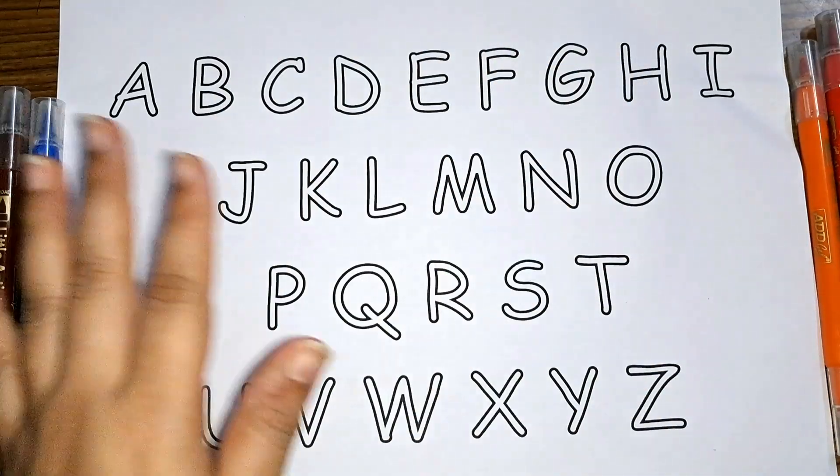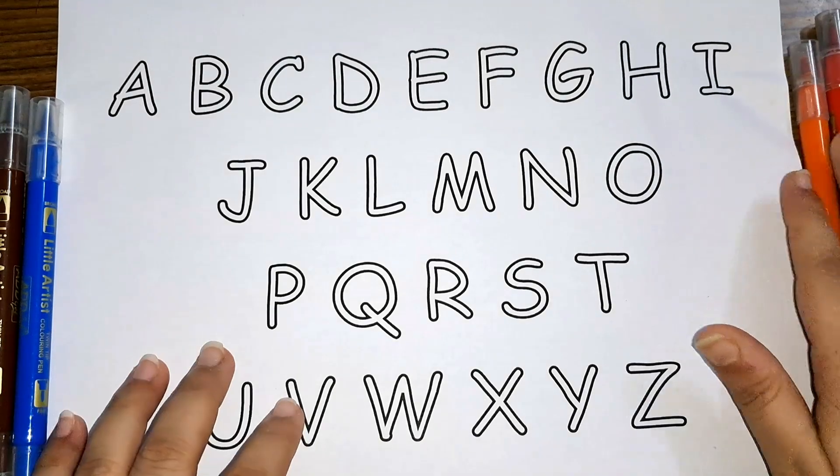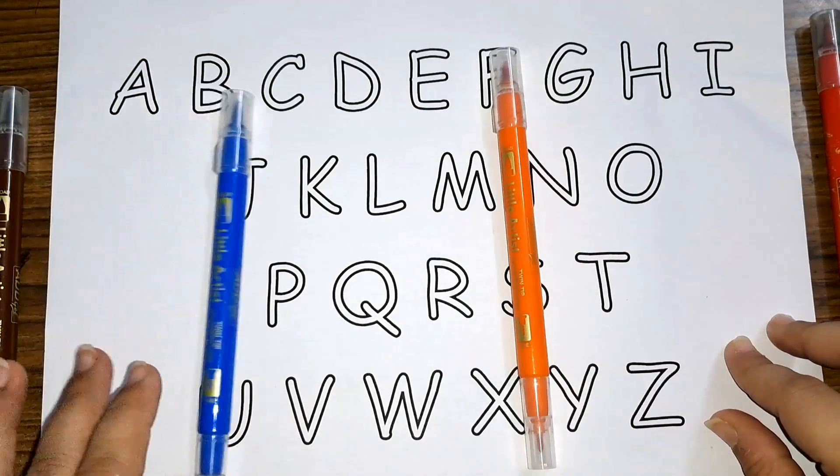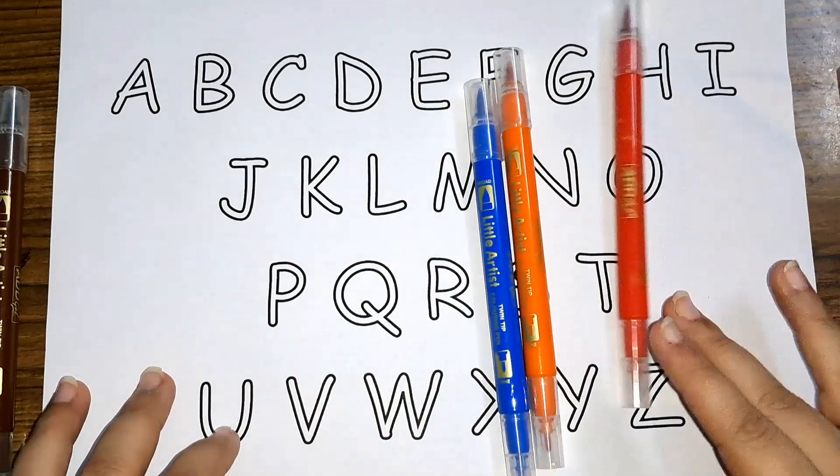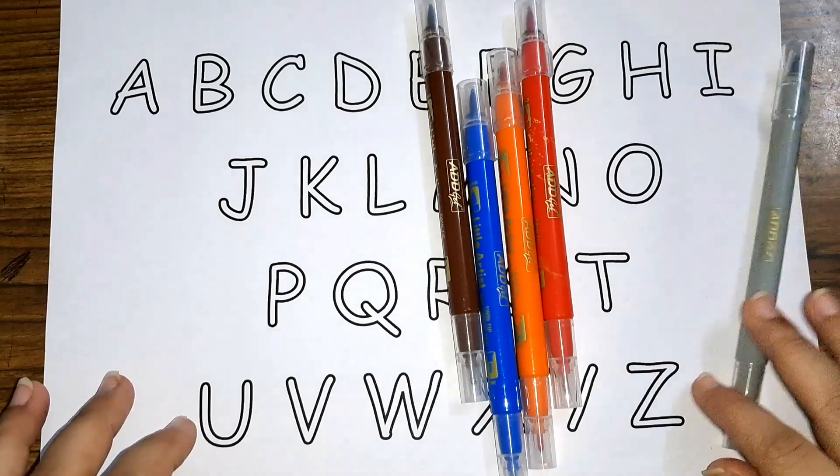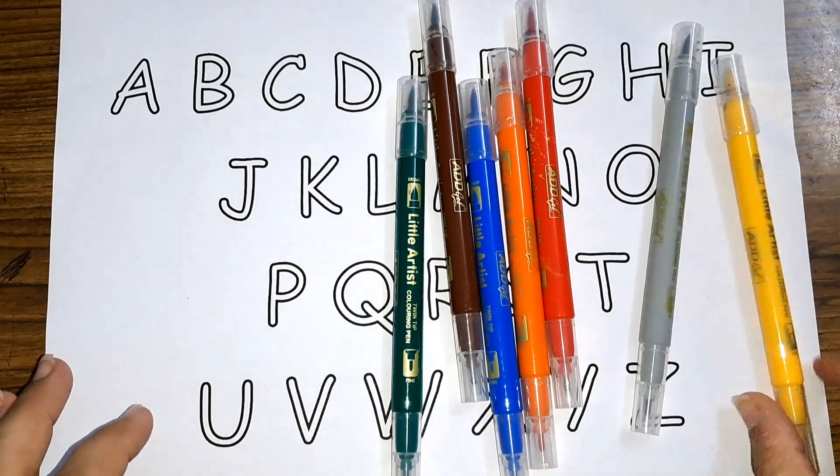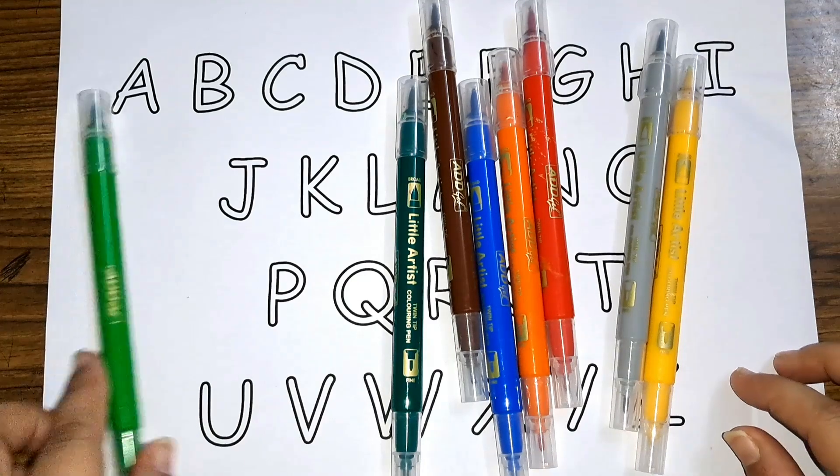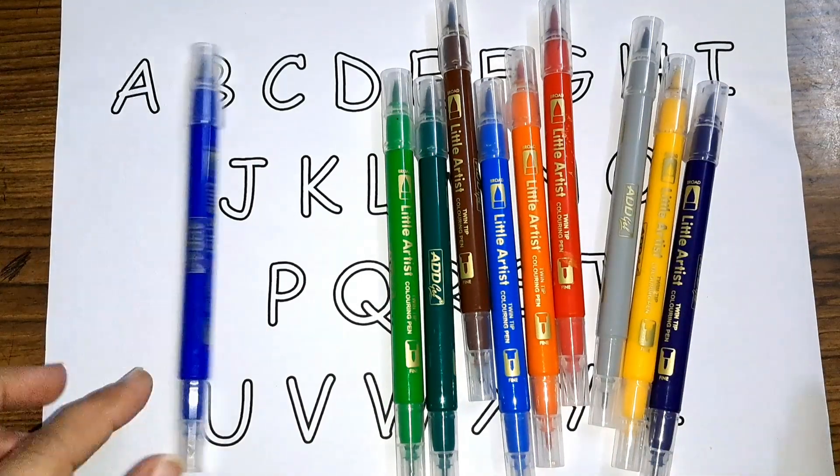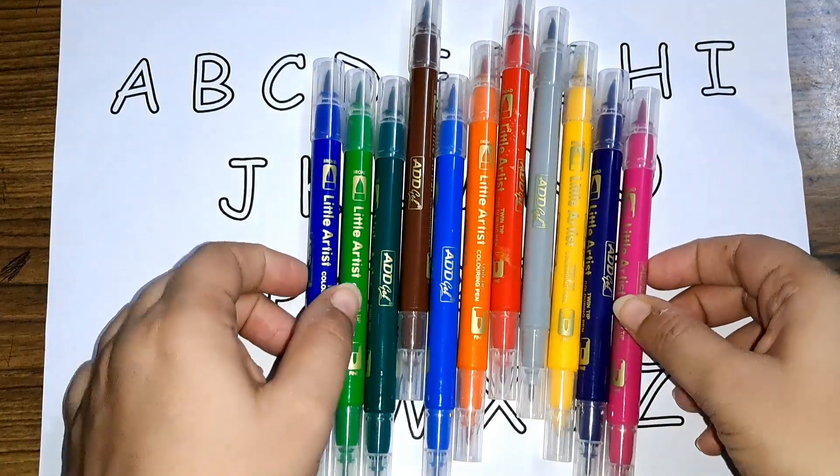Hey kids, let us learn some shapes today. But first, let us learn some colors: orange color, light blue color, red color, brown color, gray color, dark green color, yellow color, light green color, purple color, dark blue color, pink color. These are the colors.